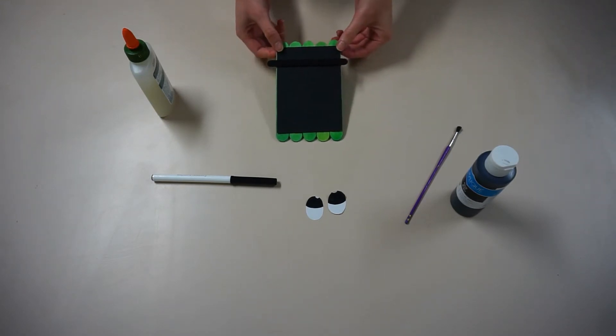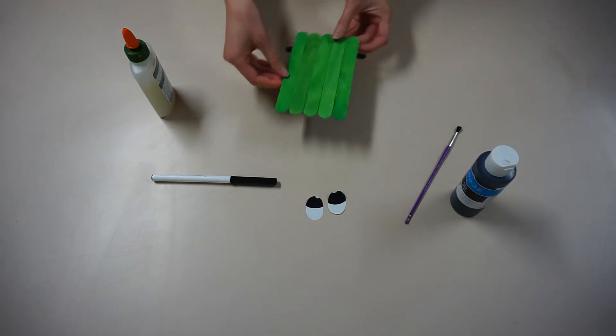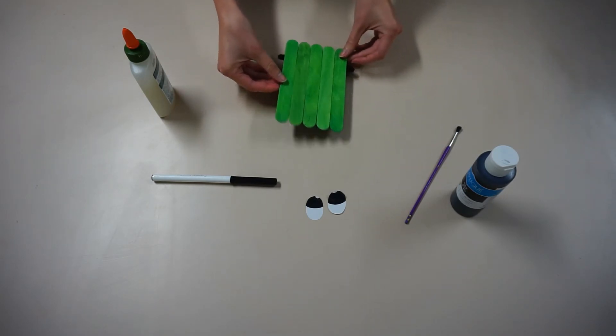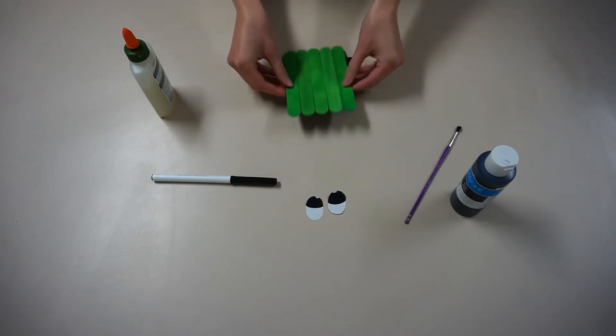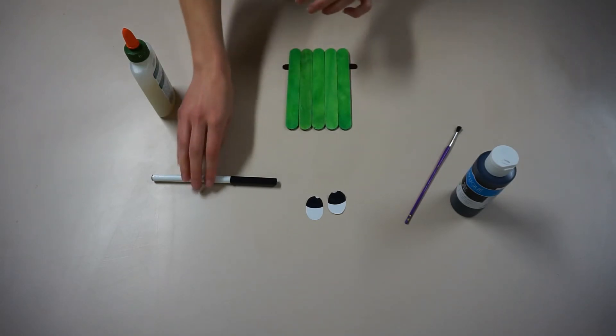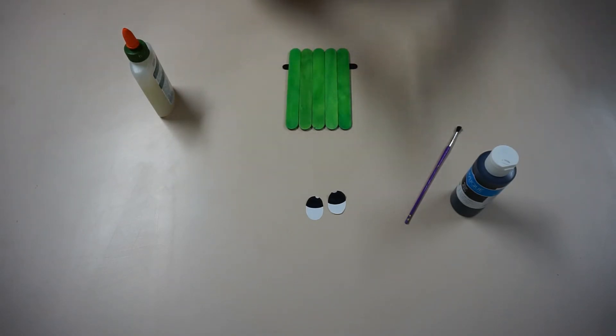So next you're going to take the entire craft and flip it over. So this is going to be Frankenstein's face. First thing you're going to do on this side is draw out an outline of Frankenstein monster's hair.